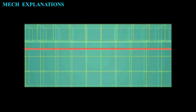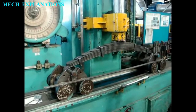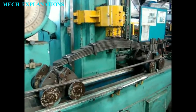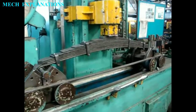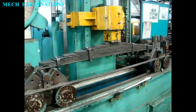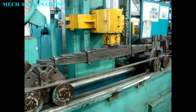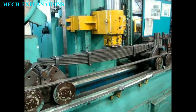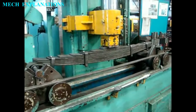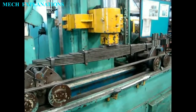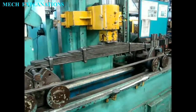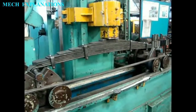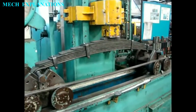Stiffness is the rigidity of an object — the extent to which it resists deformation in response to an applied force. The stiffness of a body is a measure of the resistance offered by an elastic body to deformation.